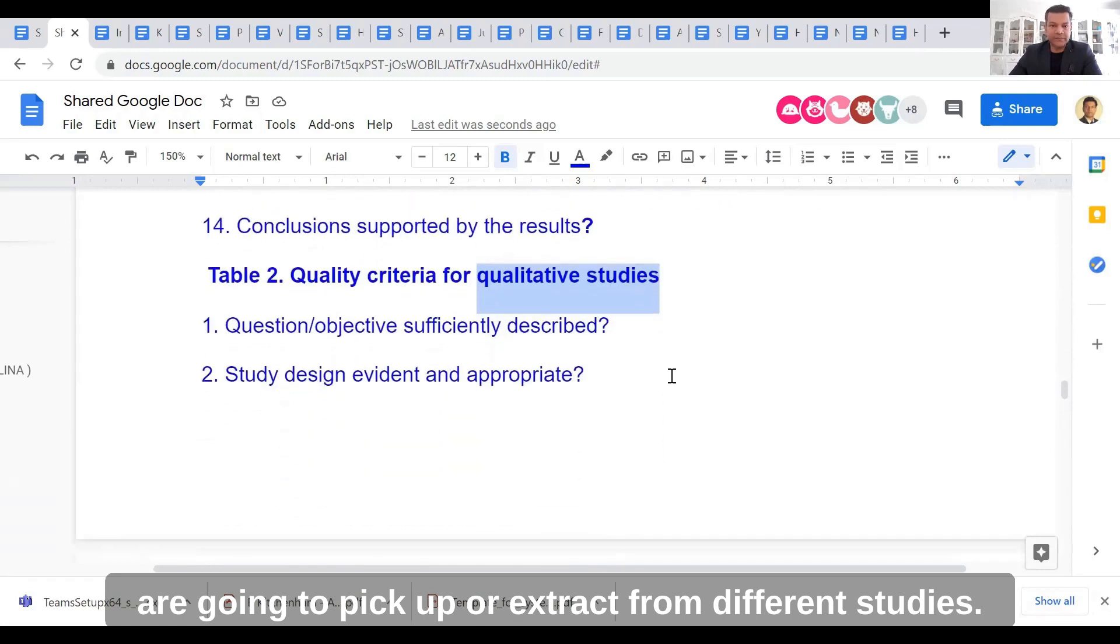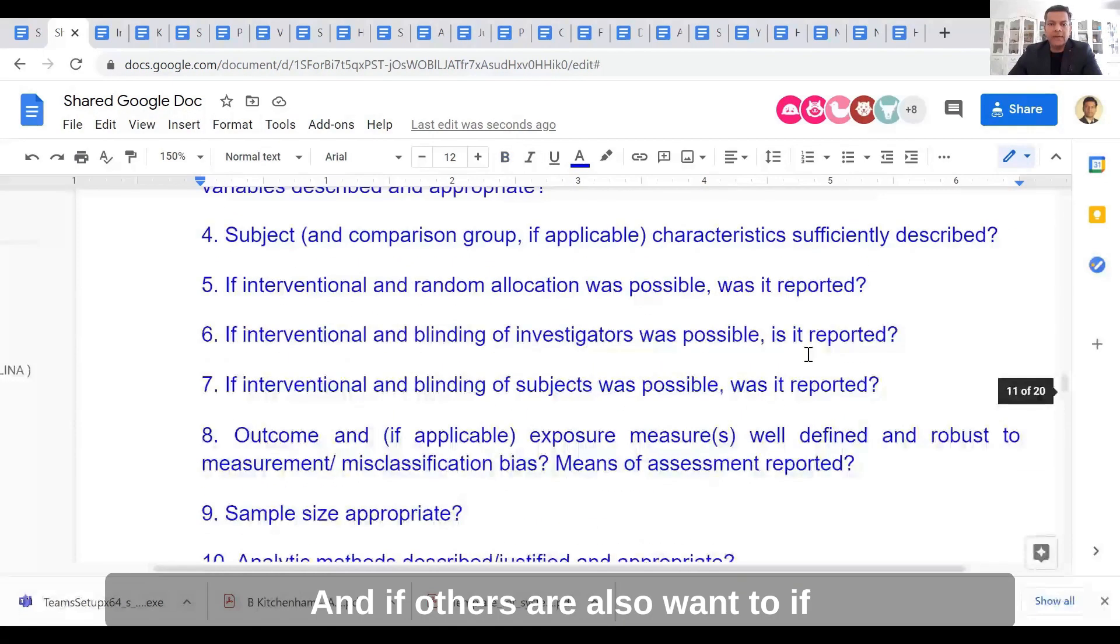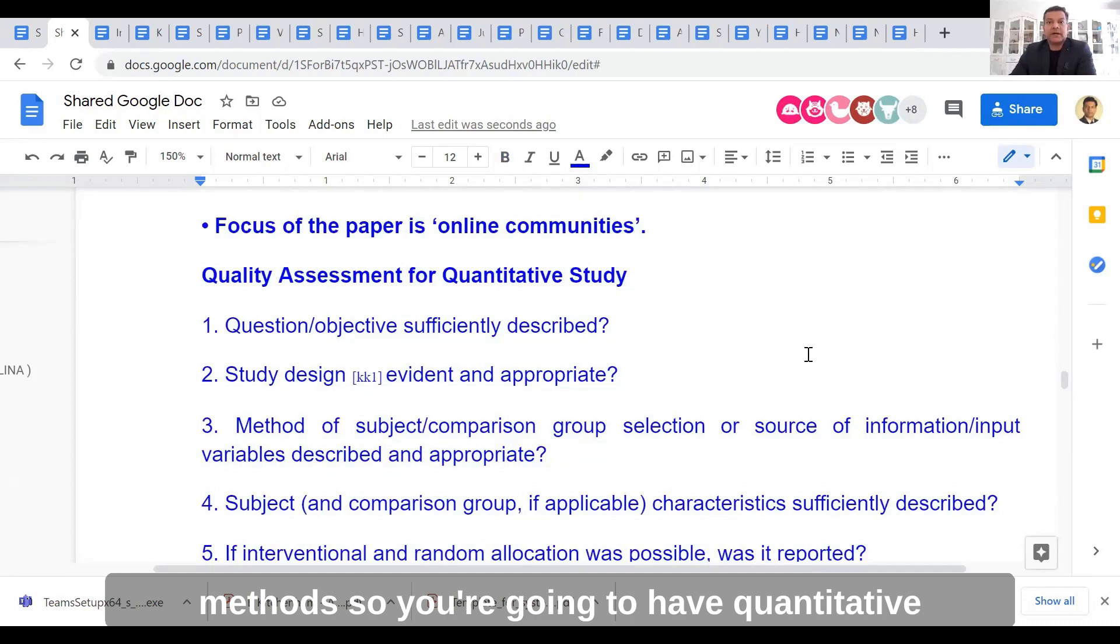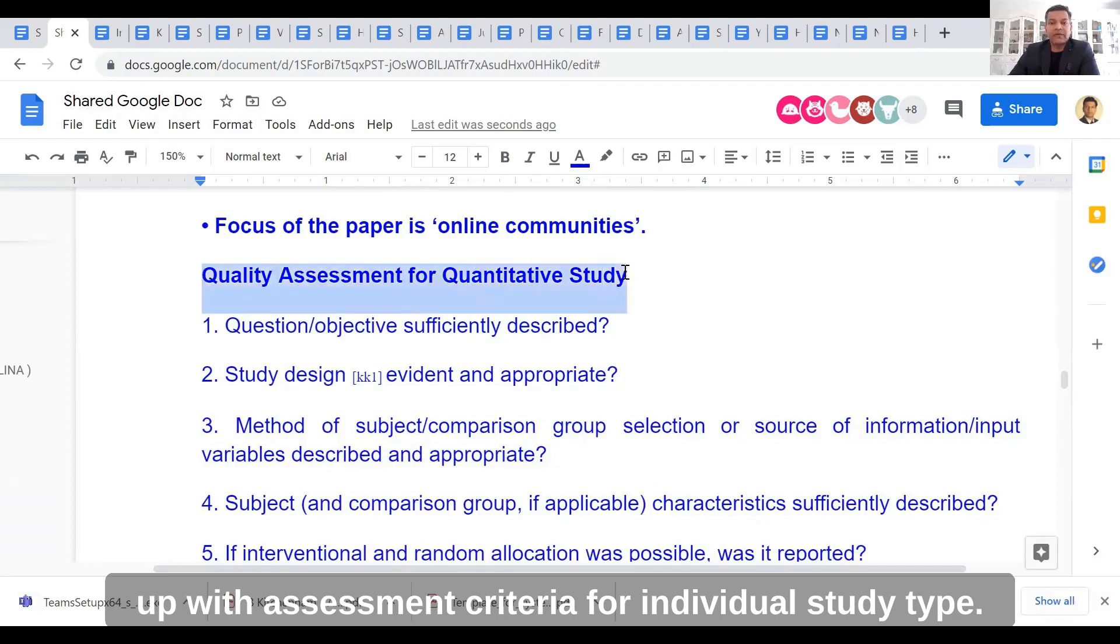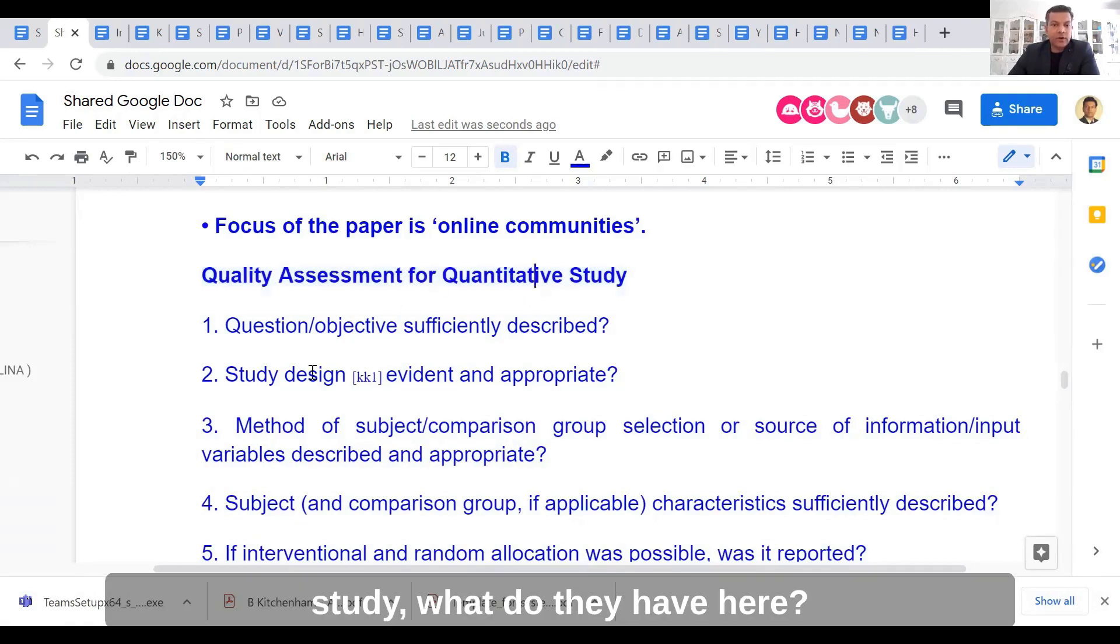This is perfectly good. If your primary studies are going to be mixed methods, with qualitative, quantitative, or other methodologies, you could come up with assessment criteria for individual study types. That's perfectly fine. In case of the quantitative study, what do they have here?